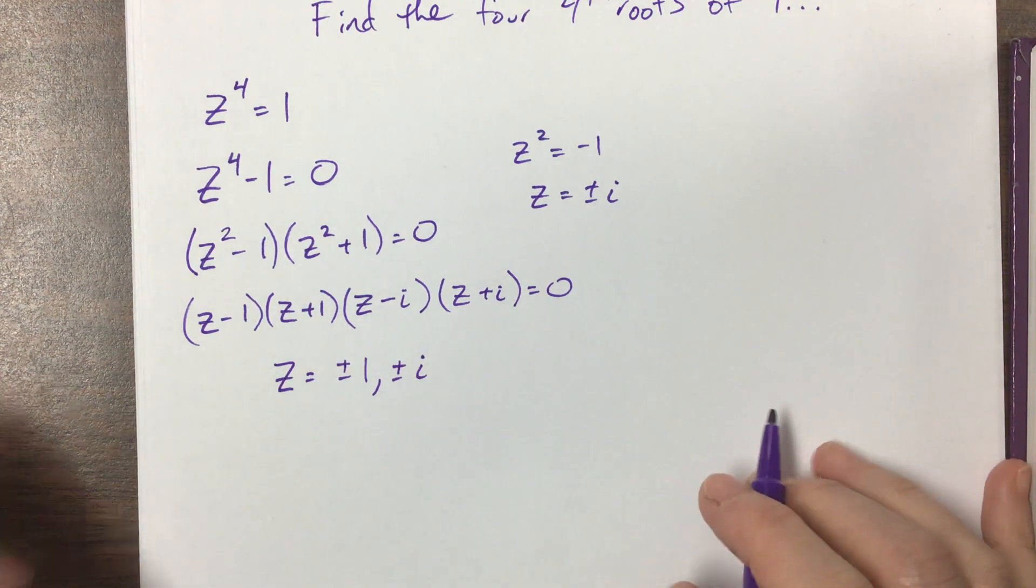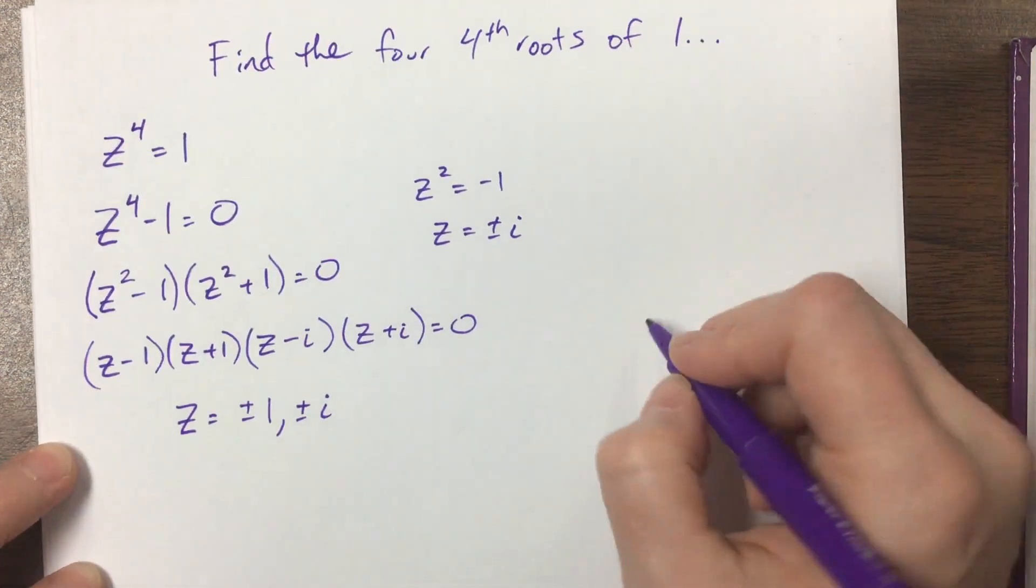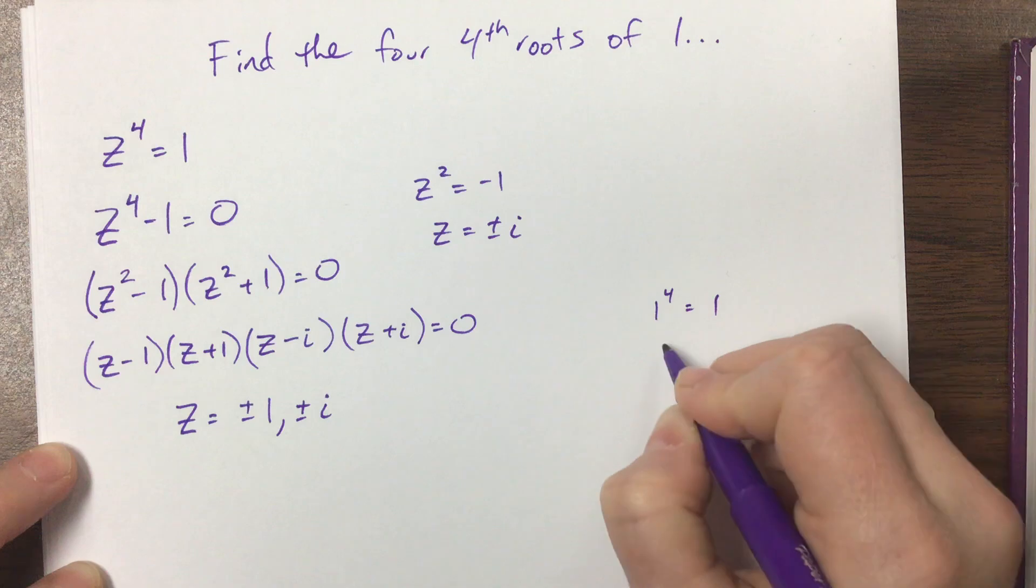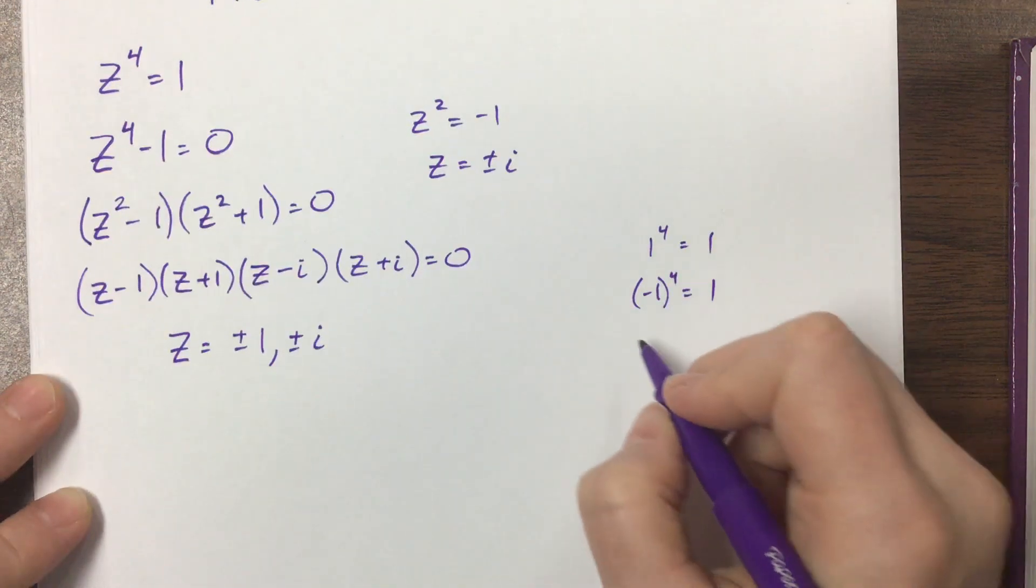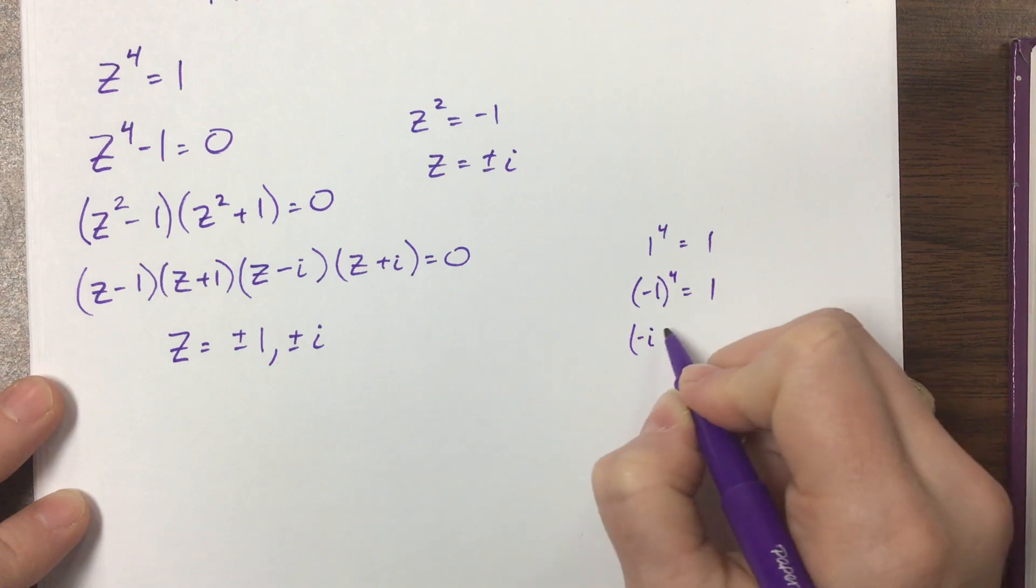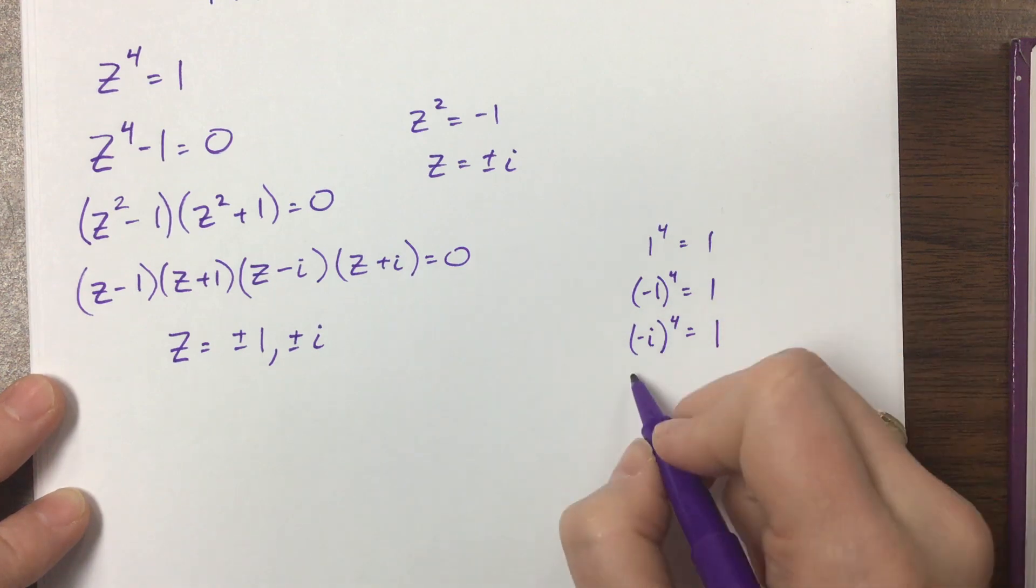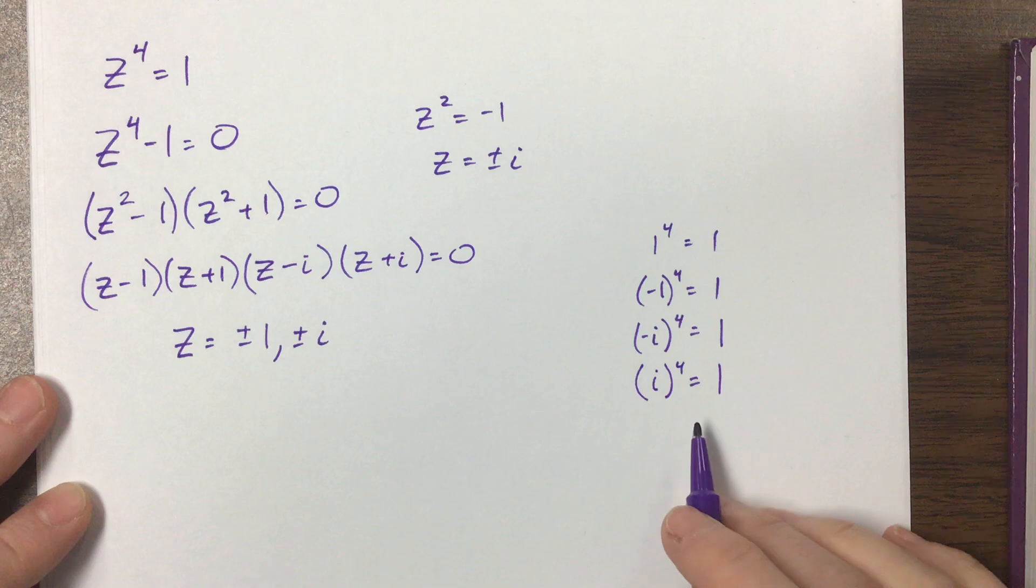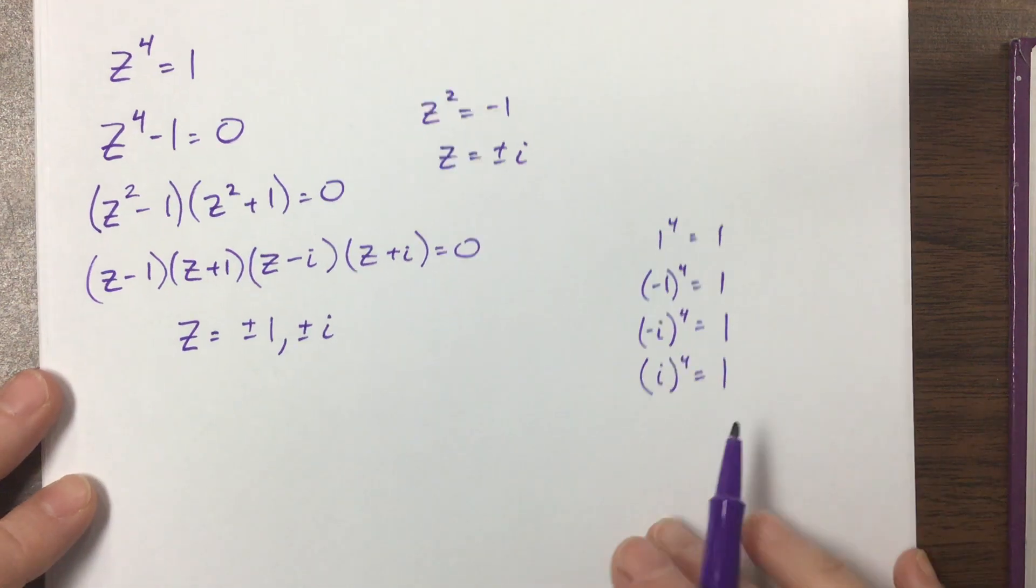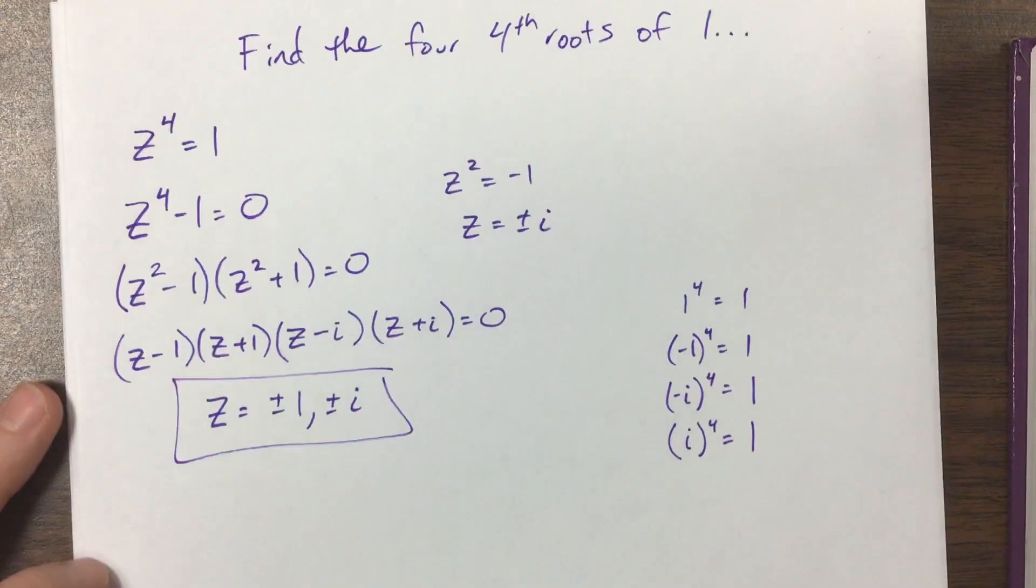Now if you think about this, if I take any of these four numbers and I raise them to the fourth power, 1 to the fourth is equal to 1, negative 1, the negative raised to the fourth power is still positive 1. Now when I have a negative i to the fourth, a negative becomes a positive. The i to the fourth is equal to positive 1. If I have i to the fourth, we just said that's equal to positive 1. Refresh some of the earlier videos if that doesn't make sense to you. So here are the four fourth roots of positive 1.